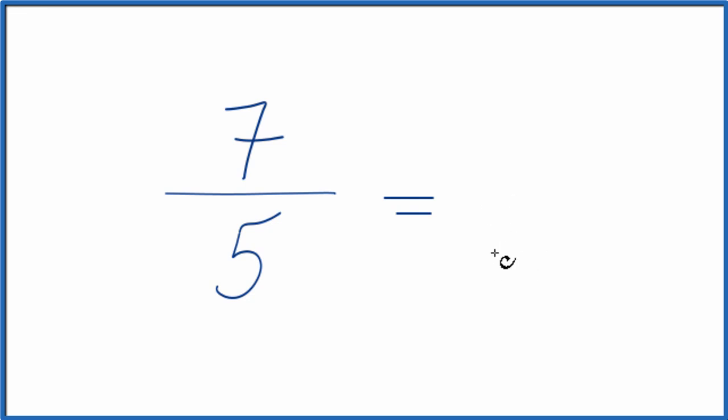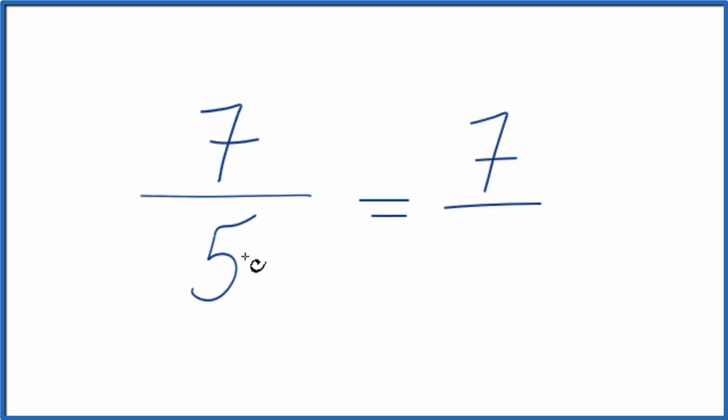To do that, we need to find a factor that's common to both 7 and 5. The thing is, the only number that goes into both 7 and 5 is 1. So if you take 7 and divide it by 1, you get 7. 5 divided by 1, you get 5.